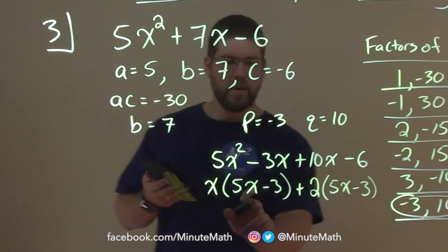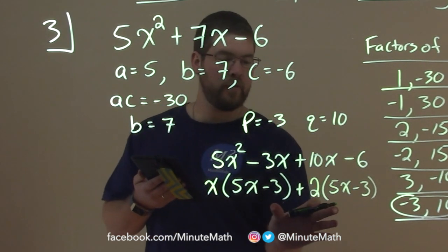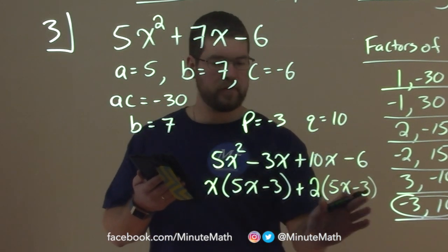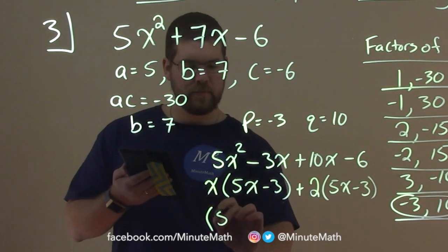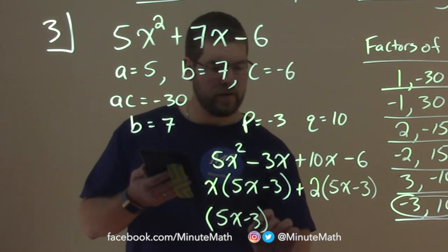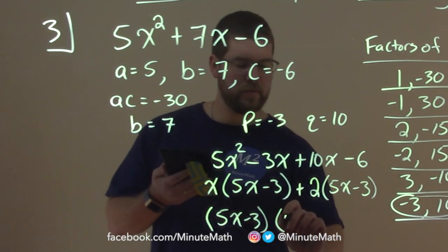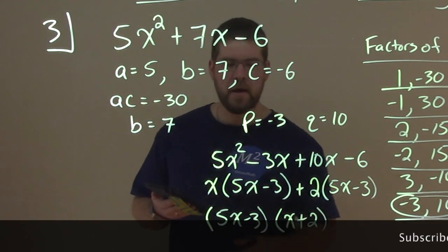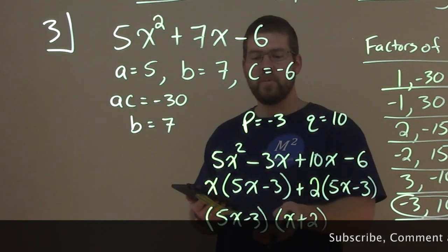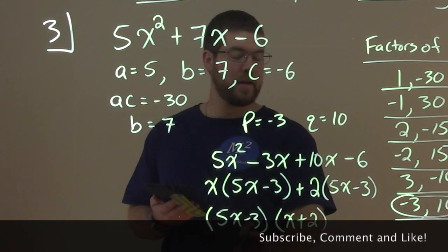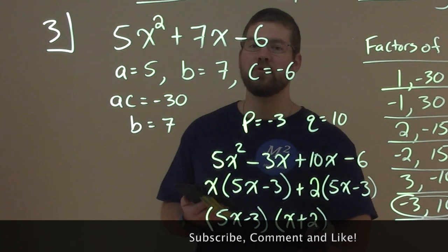And now, we can pull out 5x minus 3 from both terms here. And we have 5x minus 3 times what's left, the x plus the 2 on the inside. And now, we've actually factored by grouping. Our final answer is 5x minus 3 times x plus 2.